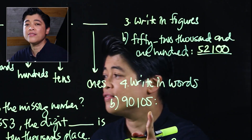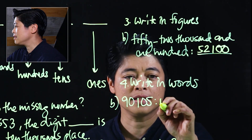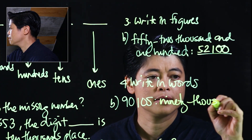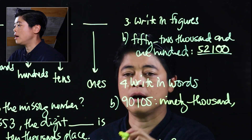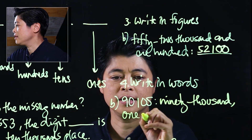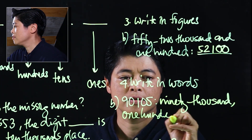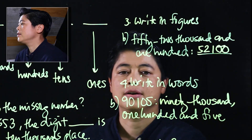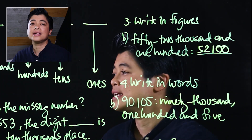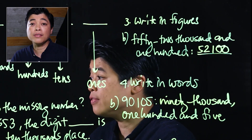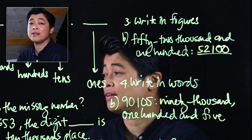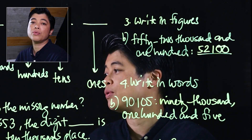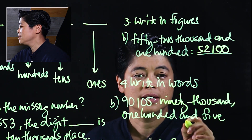Number 4 says write in words, and the number given is 90,105. Since they give the word form and want you to write it in figures, they use 'and,' so we have to make sure to use 'and' when we write the words as well.